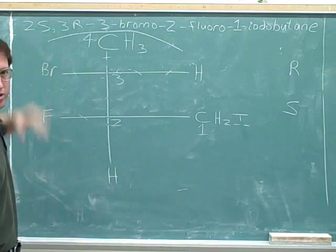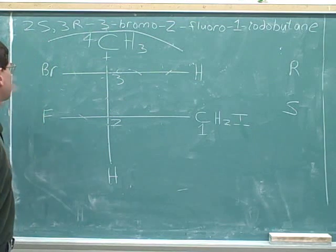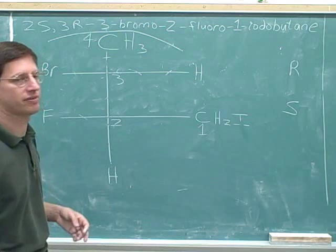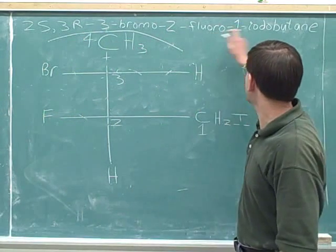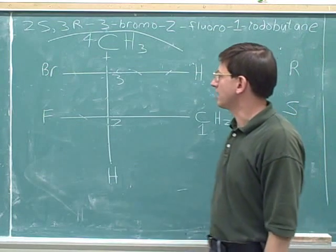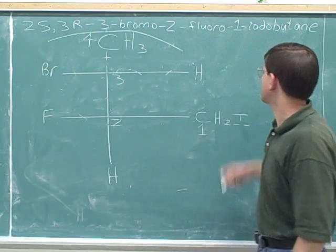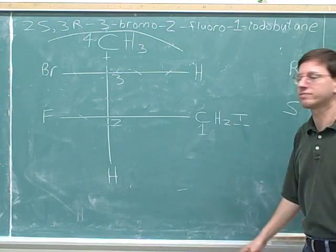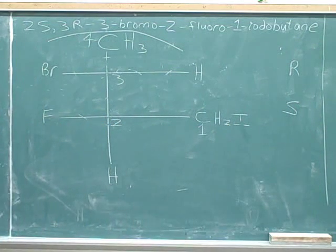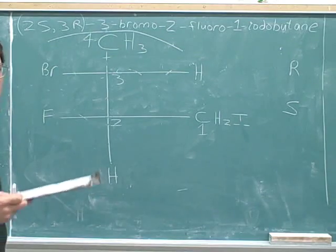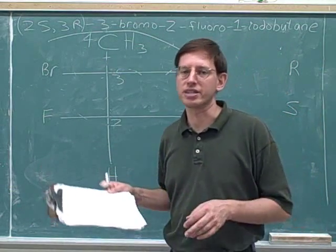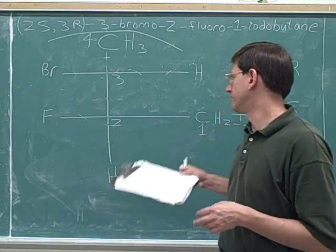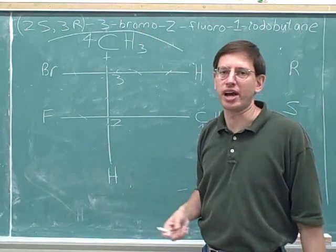Even if both stereocenters had the same configuration, you would still have to give them numbers — for example, 2S,3S. The bromine is on the number 3 carbon, the fluorine is on the number 2 carbon, and the iodine is on the number 1 carbon. We list substituents in alphabetical order: B before F, F before I. There were 4 carbons total, so this is butane. The stereochemistry is placed in parentheses in the official format. One of the main purposes for determining whether a stereocenter is R or S is so you can write the complete correct IUPAC name.